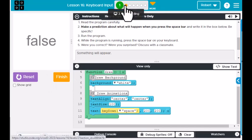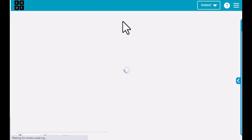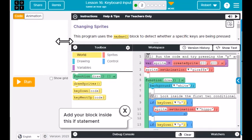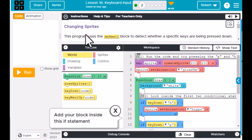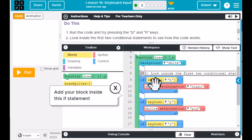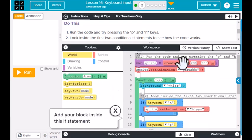Now we're going to go on to part two here, focusing on the key down as well. It says the program uses the key down block to detect whether specific keys are being pressed down. Run the code and try pressing the P and H keys. If we notice down here, when we press key down H and key down P, something occurs. The animation changes. If we press H, it looks like there's going to be an animation for this particular sprite that's in the middle of the screen. Currently it's a giraffe.